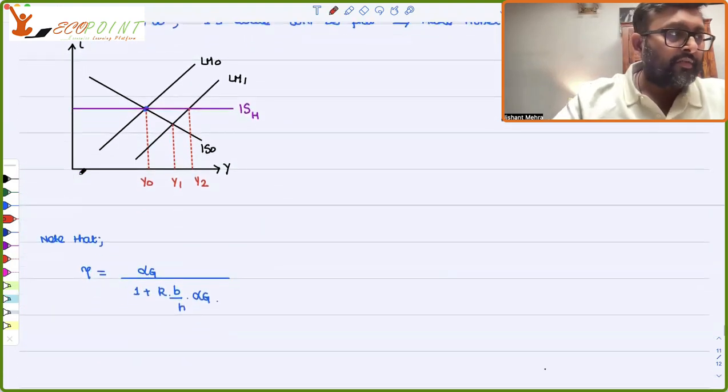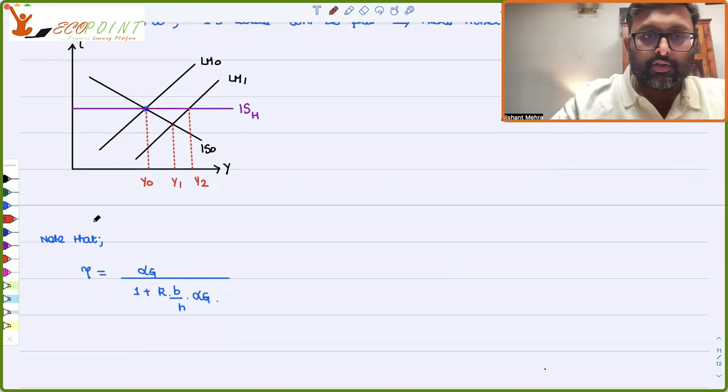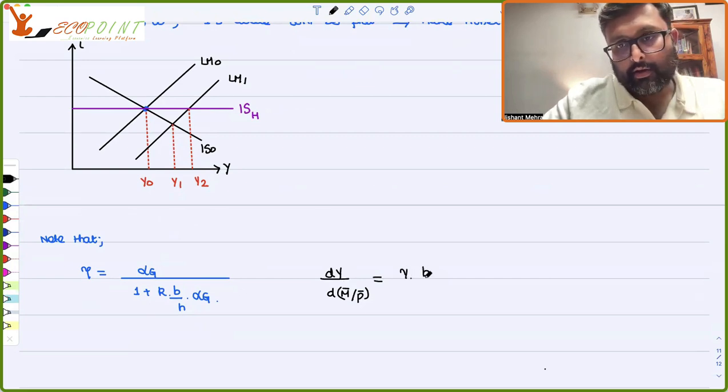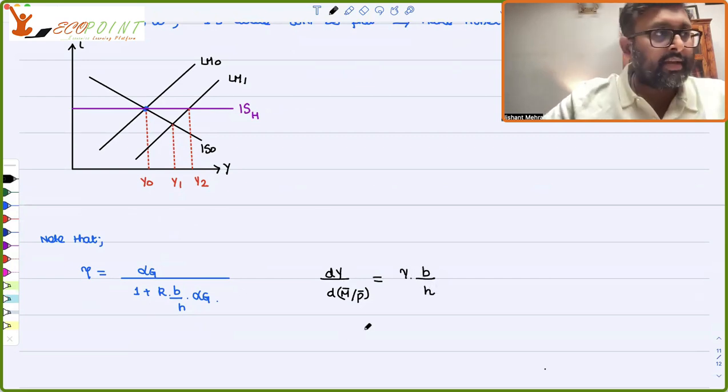Now, we have this gamma, which is equal to alpha G and all this. And we have already derived what is the monetary policy multiplier, that is DY upon DM bar by P bar. So what is it that we have said? We have said it is gamma B by H.